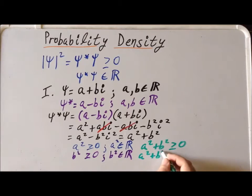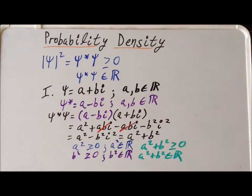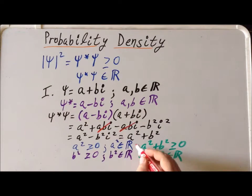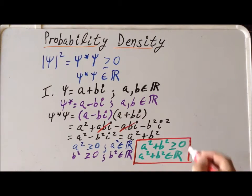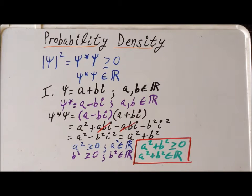So we've proven what we set out to prove. We've proven that the probability density is actually a non-negative real number, which is what we need if we want to use the probability density and interpret it as the probability of a particle being in a particular location in space.